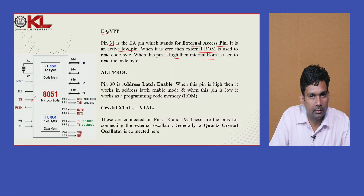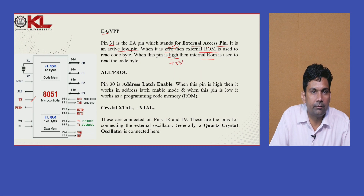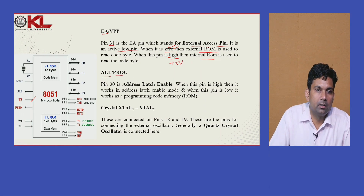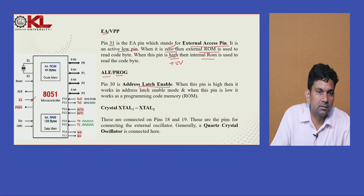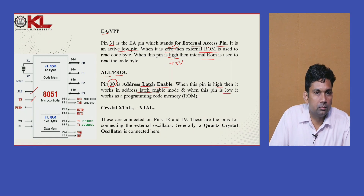If we want to read data from internal memory, we supply it high voltage — connect it to VCC (5 volts). When we want to use external memory, we supply 0 — connect it to ground. Pin number 30 is ALE — Address Latch Enable. When this pin is high, it works as address latch enable mode; when it goes low, it works as programming code memory.